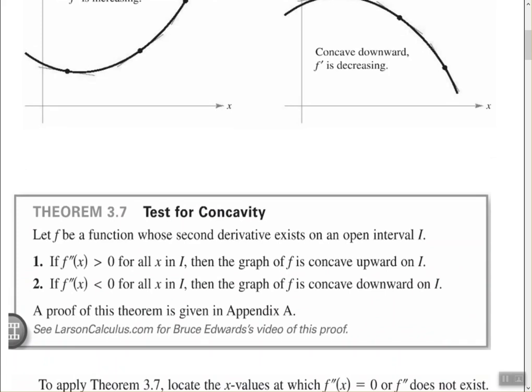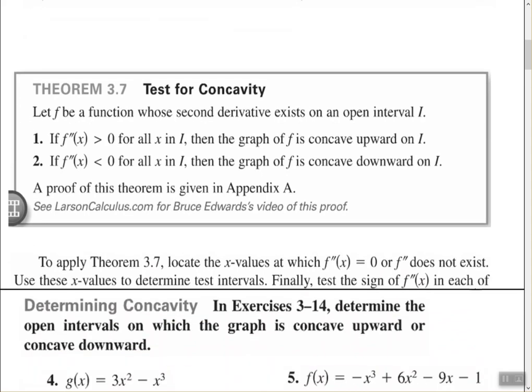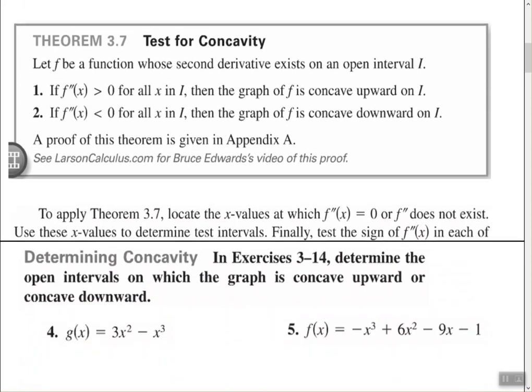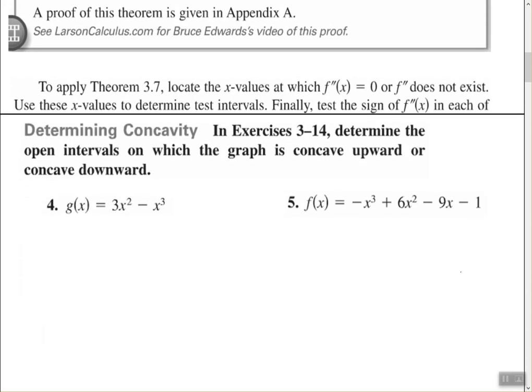To test for concavity: let f be a function whose second derivative exists on an open interval I. If the second derivative is greater than 0 for all x in I, then the graph of f is concave upward on that interval. If the second derivative is less than 0 for all x in I, then the graph is concave downward. To apply this theorem, locate values where the second derivative equals 0 or does not exist, use those values to determine test intervals, then test the sign of the second derivative in each interval.